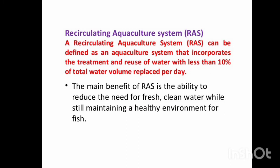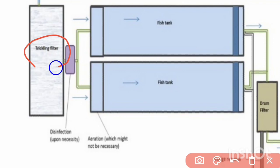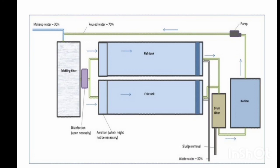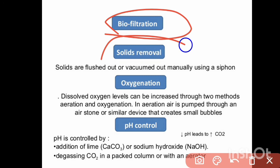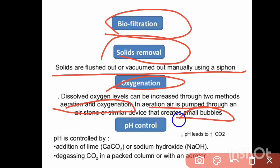Looking at the RAS model, it includes a trickling filter, fish tanks, disinfection, a treatment plant, pumps, and water supply filters. The key processes are: biofiltration, solid removal — solids are removed by vacuum and manually — and oxygenation, where dissolved oxygen levels can be increased through aeration using air pumps creating small bubbles. pH is controlled by addition of lime and sodium hydroxide, and CO2 is removed using a packed column or aerator.